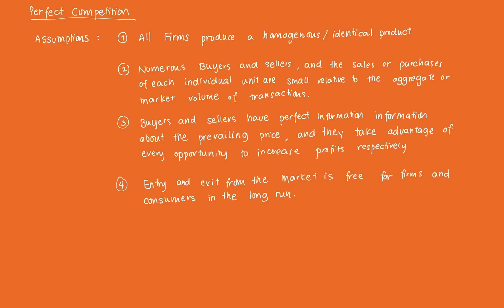Before, we held the two constructs — the two main economic agents — in isolation, but when we get to market structures we now bring these two economic agents together. The first market structure we'll tackle is perfect competition. If you ask anyone for an example, they'd typically say something like a wet market, wherein you have stalls that roughly sell the same products and charge roughly the same price.